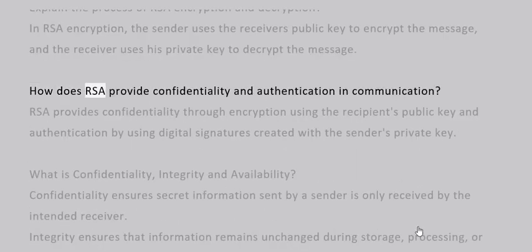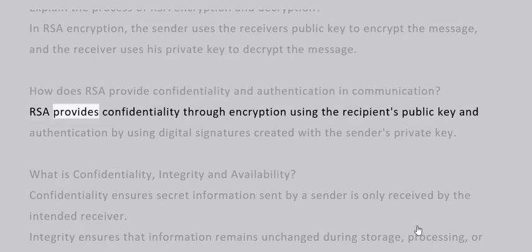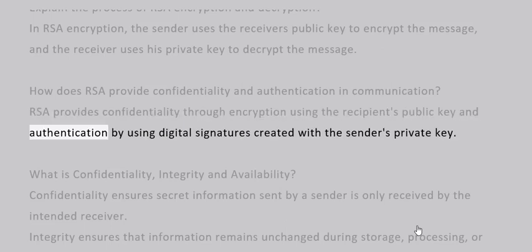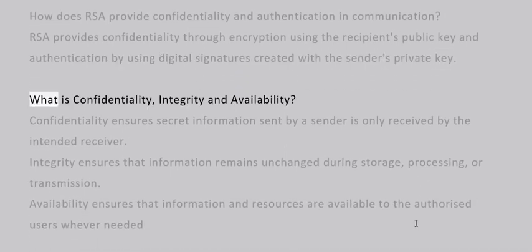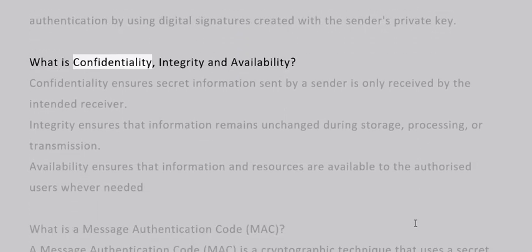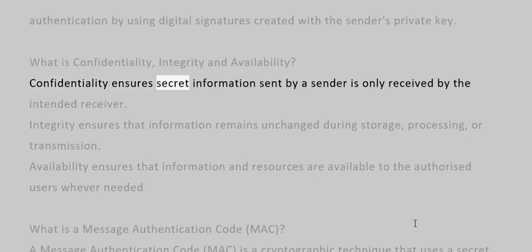How does RSA provide confidentiality and authentication in communication? RSA provides confidentiality through encryption using the recipient's public key, and authentication by using digital signatures created with the sender's private key. What is confidentiality, integrity, and availability? Confidentiality ensures that secret information sent by a sender is only received by the intended receiver.